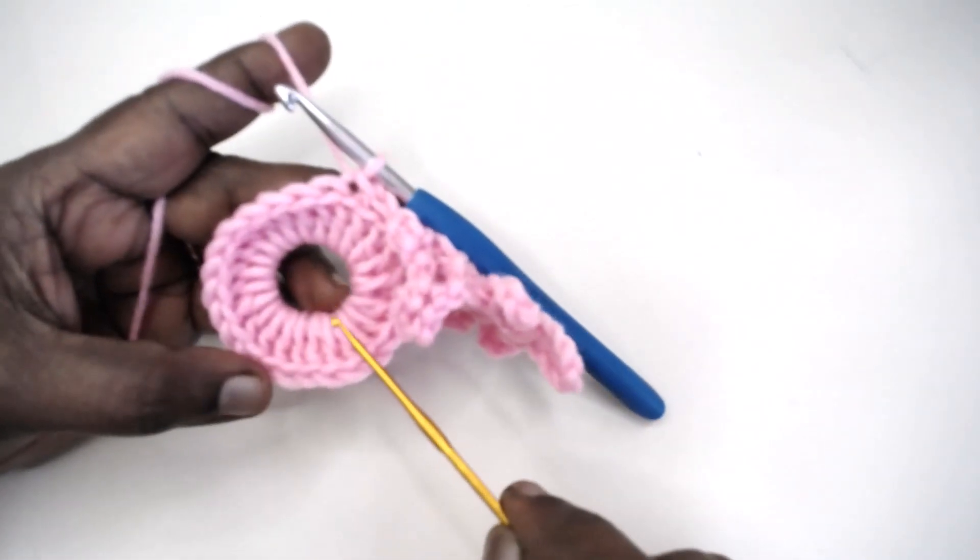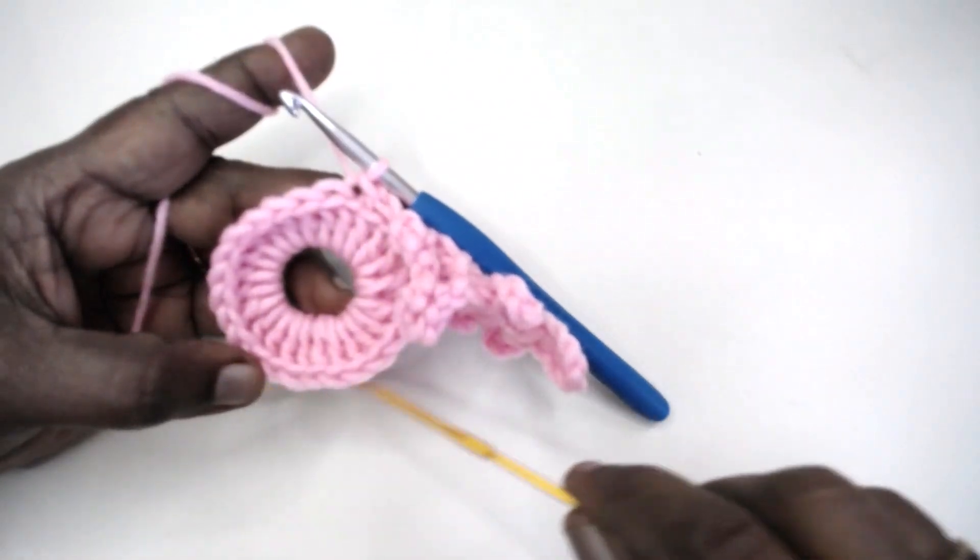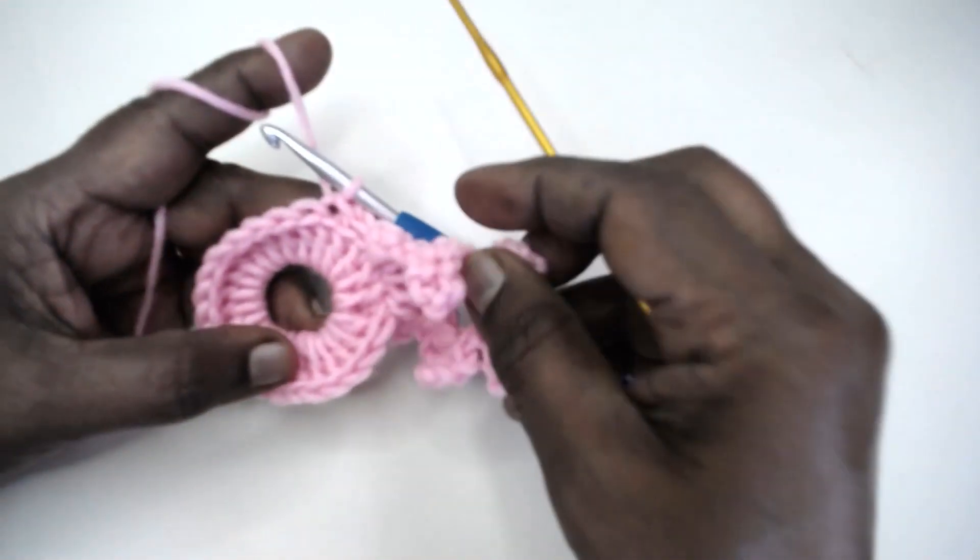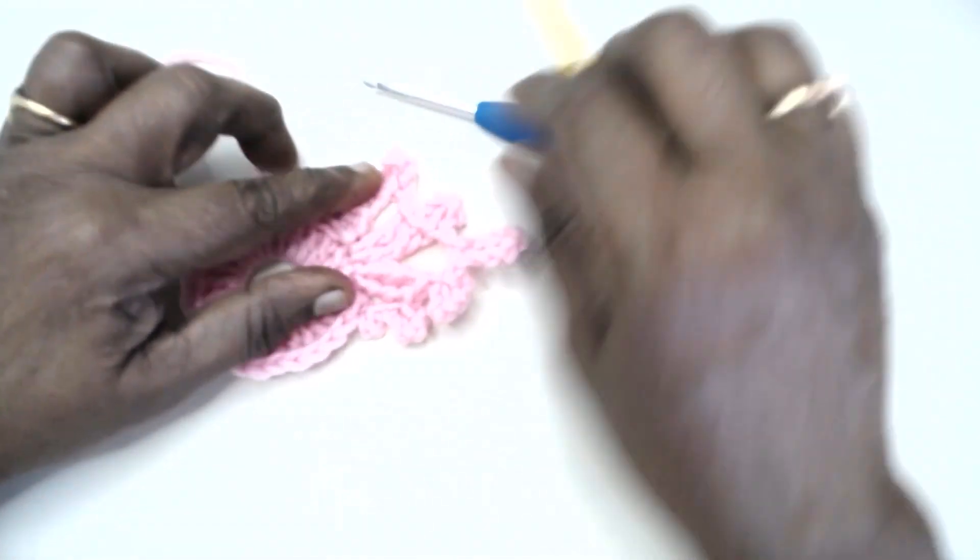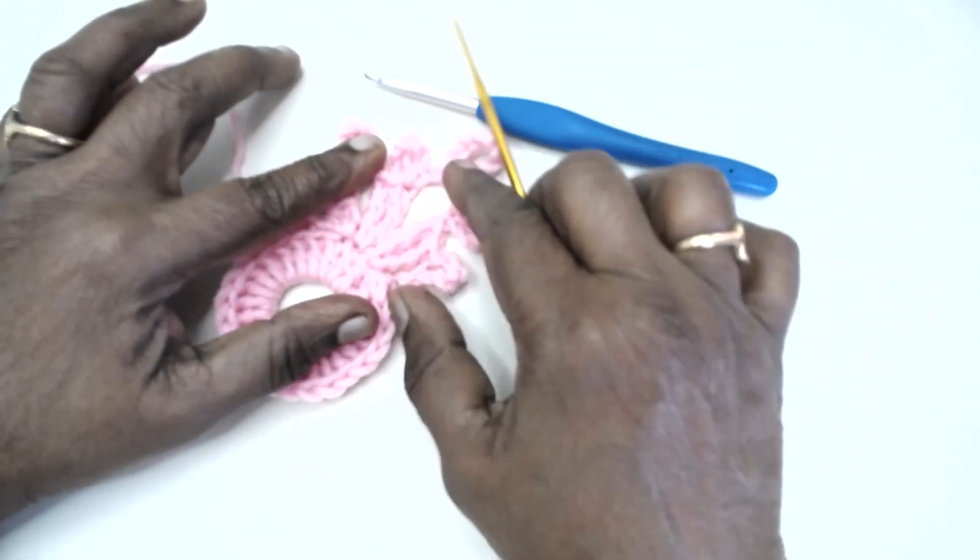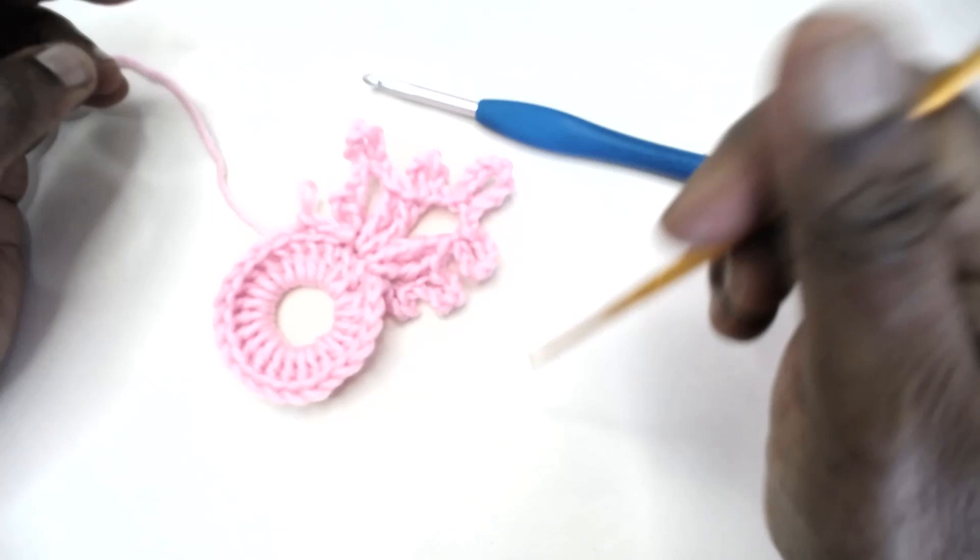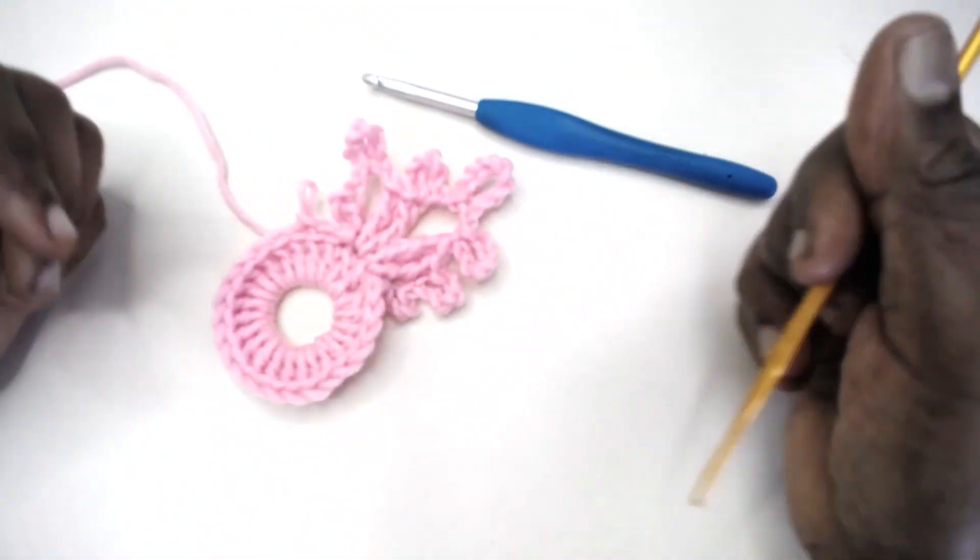At the end you should be having six flower flakes. Complete the round and get back. I shall also complete and get back.